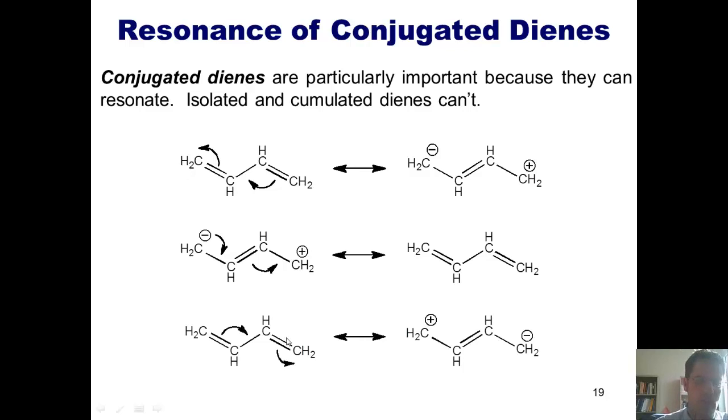I could similarly go in the opposite direction, having these pi electrons push up onto the carbon at the right, giving it a negative charge, these pi electrons closing here to give me a carbon-carbon double bond, and a positive charge on the leftmost carbon, thereby supplying me with this resonance contributor.